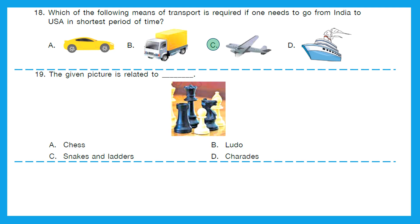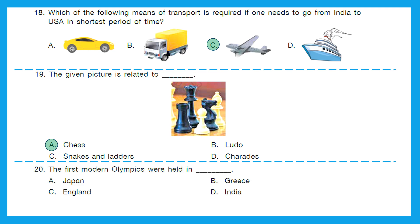Question 19: The given picture is related to which game? Many of you must be playing this game already. We can see king, bishop, knight, rook, queen — and this is chess. Option A is the right answer. Question 20: The first modern Olympics were held in? The first modern Olympics were held in Athens, Greece in 1896. The right answer is option B, Greece.